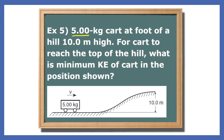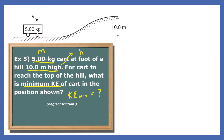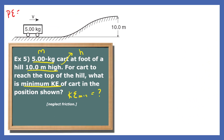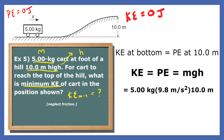A 5 kg cart is at the foot of a hill that's 10 meters high. For the cart to reach the top of the hill, what is the minimum kinetic energy of the cart in the position shown? The cart's kinetic energy at the bottom will completely turn into potential energy at the top of the hill, which will cause the cart to stop.